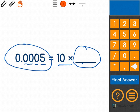And I know that when I multiply by 10, I move the decimal point one place to the right.